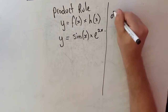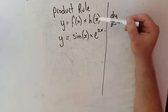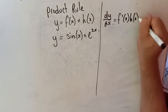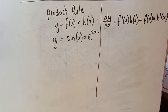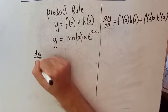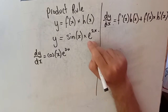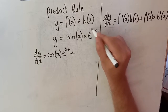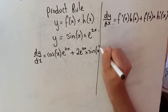For the product rule, when I've got y = f(x)·h(x), then dy/dx equals f′(x) times the original h(x), plus the original f(x) times h′(x). You just take the derivative of one function at a time and add the results. So here: the derivative of sin(x) is cos(x), times the original e to the 2x; plus the derivative of e to the 2x — using the chain rule, that's 2e to the 2x — times the original sin(x). That gives dy/dx = cos(x)·e^(2x) + 2e^(2x)·sin(x).